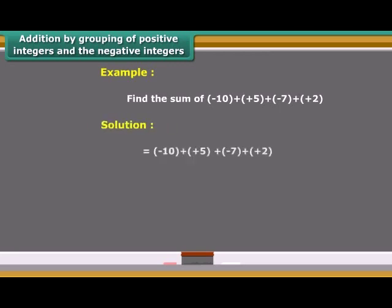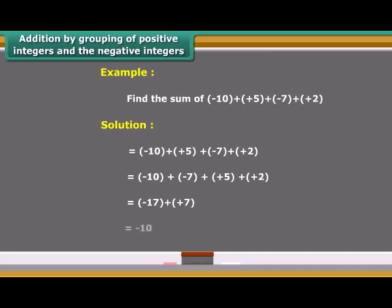For better understanding, we can solve one example. We arrange the numbers so that the positive integers and the negative integers are grouped together.